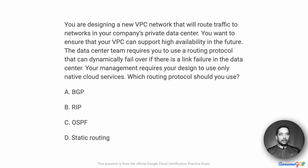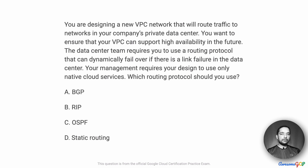In this project scenario, you are designing a new VPC network that will route traffic to networks in your company's private data center. You want to ensure that your VPC can support high availability in the future. The data center team requires you to use a routing protocol that can dynamically failover if there is a link failure in the data center. Your management requires your design to use only native cloud services. Which routing protocol should you use?